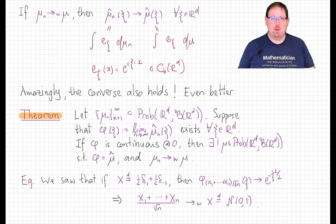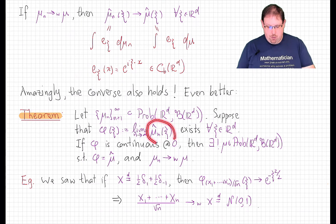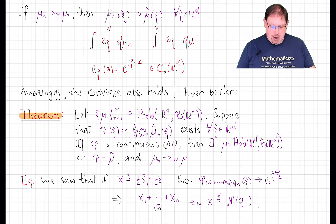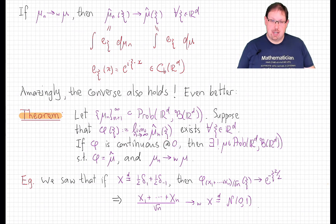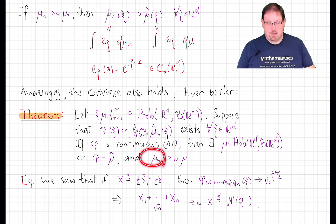Here is what is known as the continuity theorem that we're going to prove in this lecture. If μn is a sequence of Borel probability measures on ℝ^d, suppose that the Fourier transforms μ̂n have a pointwise limit function φ, and suppose that that pointwise limit function is continuous at zero. Then φ is the characteristic function of a unique Borel probability measure μ, and the original sequence of measures converges weakly to that μ.